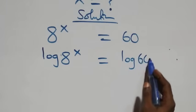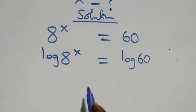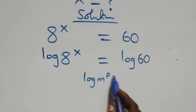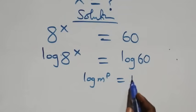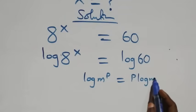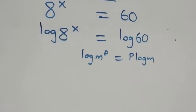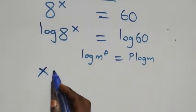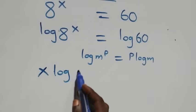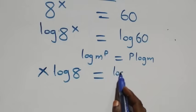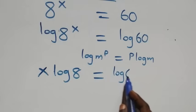The next step, we apply the power rule of logarithm: log of m raised to power p is the same thing as p times log m. So all we have here becomes x times log eight equals log sixty.